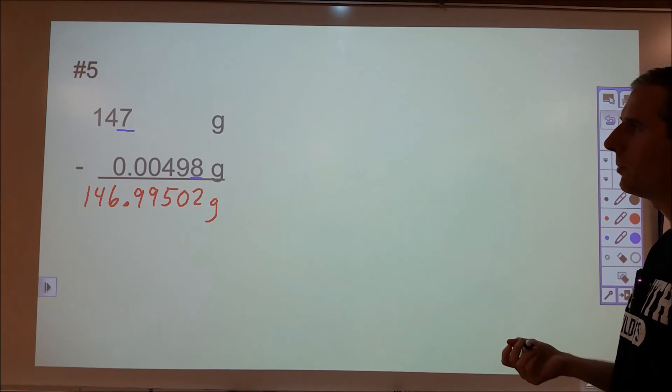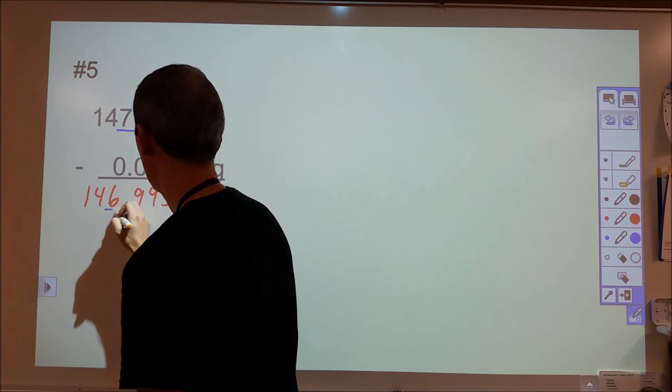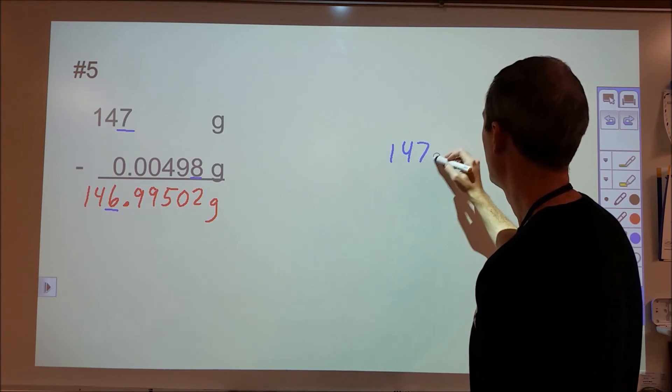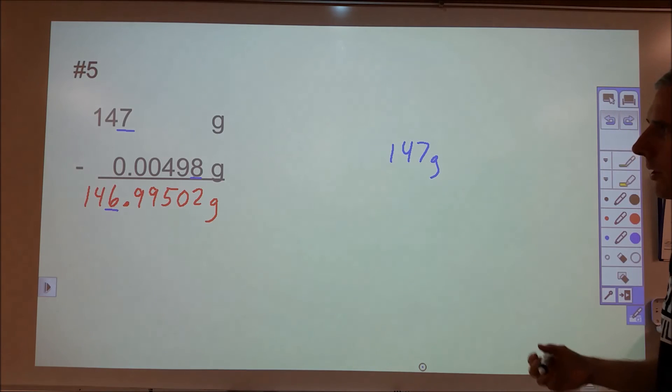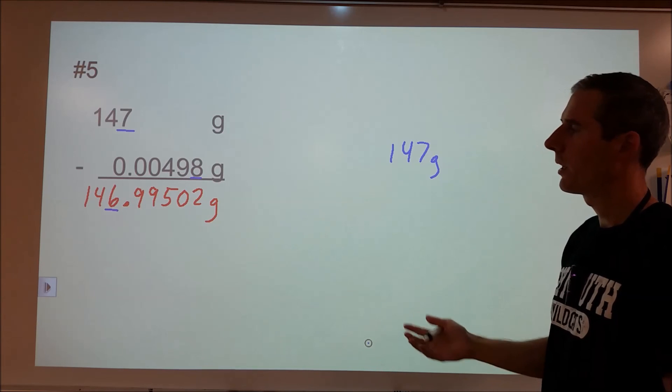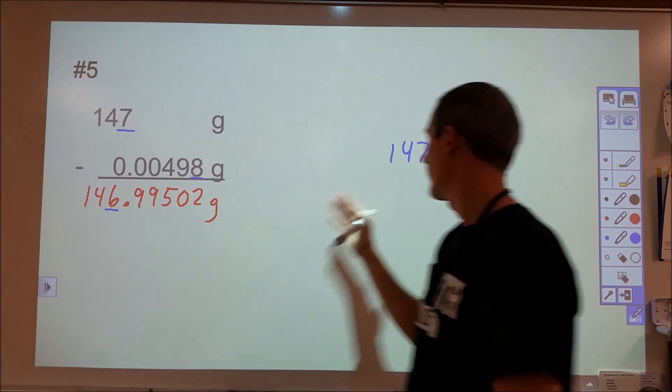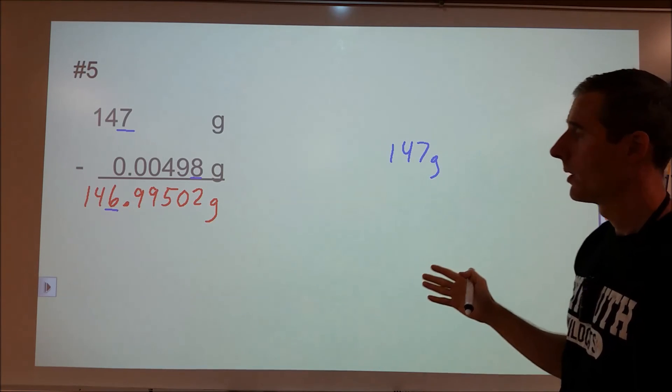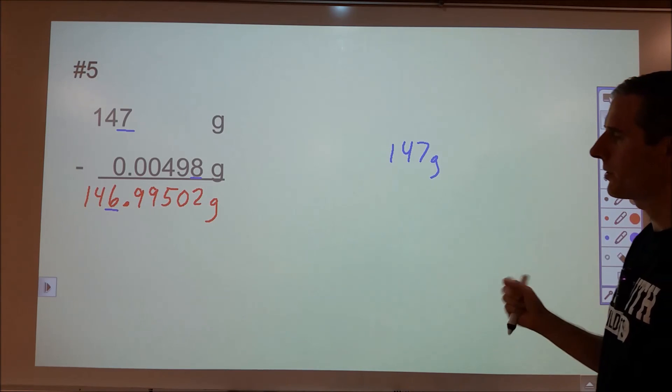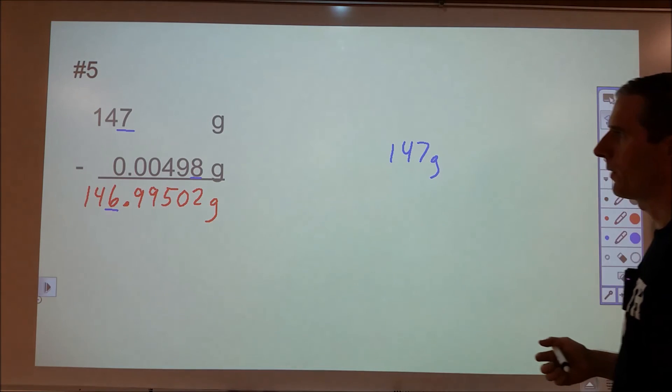And so our answer can only be good to the lesser of those two measurements, which would be the 147. So our final answer would be what we started with, 147 grams. If that makes you uncomfortable, just try and think of this like this. If I were to give you about $5,000 and someone were to give you a quarter, you wouldn't change your perception of how much money you have by the quarter because it's so small compared to the uncertainty in the original measurement that it's not going to affect things.